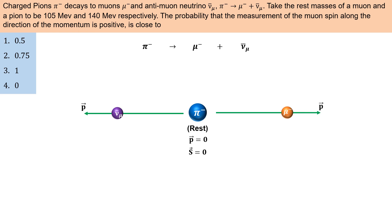जैसा कि हमने जाना, आज तक सभी neutrino left-handed और anti-neutrino right-handed helicity वाले ही मिले हैं। That means muon anti-neutrino की helicity भी right-handed होगी। तो अगर anti-neutrino left-side की ओर move कर रहा है, तो इसके spin की direction भी left-side की ओर ही होगी ताकि यह right-handed बना रहे।